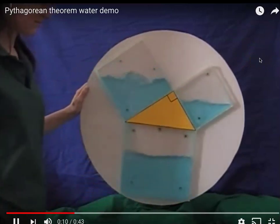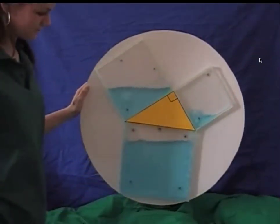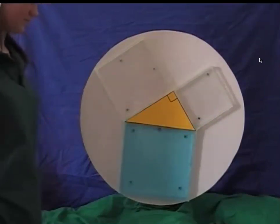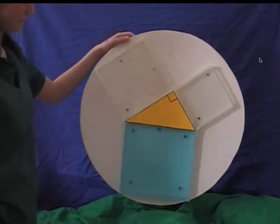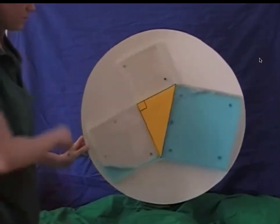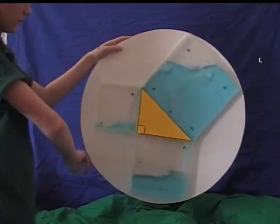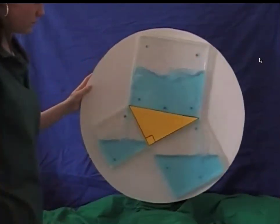So the areas of the two small squares fill the area of the big one. Hence why it's a squared plus b squared equals c squared. Right? Because how do you find the area of a square? The side lengths times each other. So like a times a would be a squared.